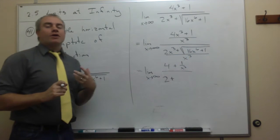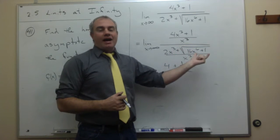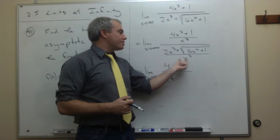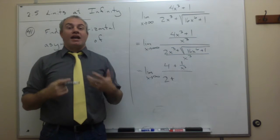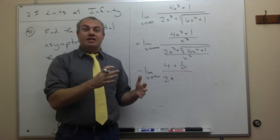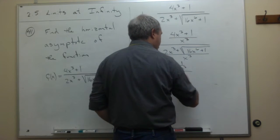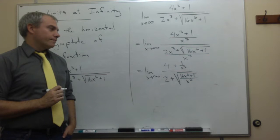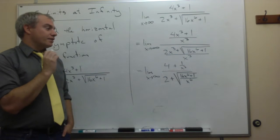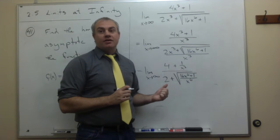Now I want to be a little bit clever. I want to move the x³ inside the square root. But if I put a square root over x³, it wouldn't be x³ anymore — it would be x⁶ under the root, since √(x⁶) = x³. So another way of writing (√(16x⁶ + 1))/x³ is √((16x⁶ + 1)/x⁶). Think about that for a second: x³ is the same as √(x⁶).